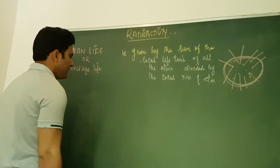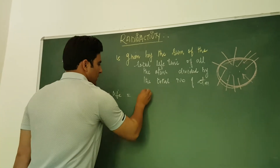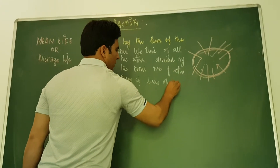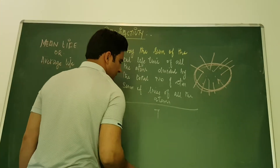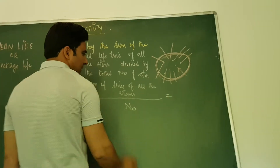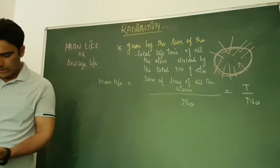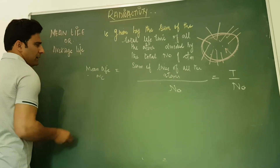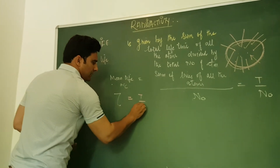Mean life, or average life, is equal to the sum of lives of all the atoms divided by the total number of atoms, that is N₀. So, tau equals T divided by N₀, where T is the total lifetime of all the atoms. The mean life or average life is represented by tau, and that is equivalent to T divided by N₀.